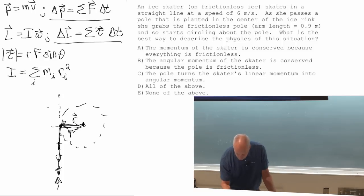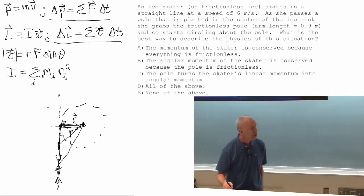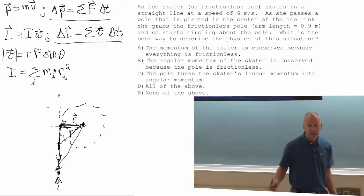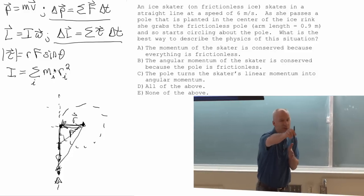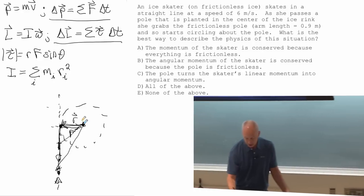Her angle with respect to the pole was changing the whole time, so she had an angular velocity. She had a rotational inertia the whole time, so she had angular momentum the whole time as she was skating in a straight line, if we say angular momentum around this pivot point over here.